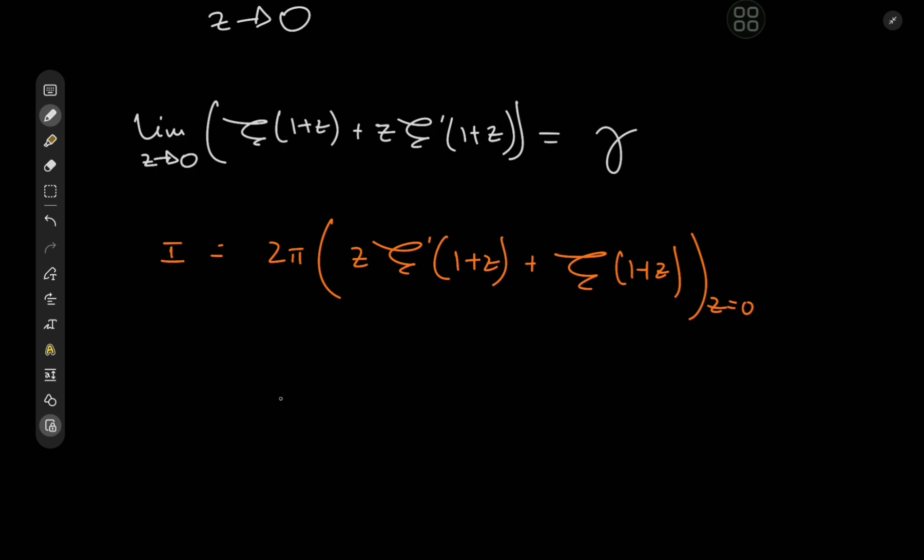The integral from 0 to 2π of ζ(1 + e^(iθ))dθ equals 2π times the Euler-Mascheroni constant. This is one of the most beautiful results I've derived here on the channel.